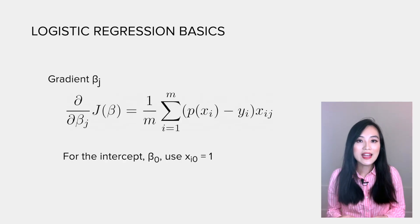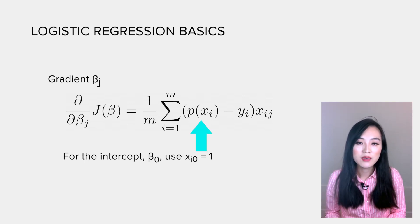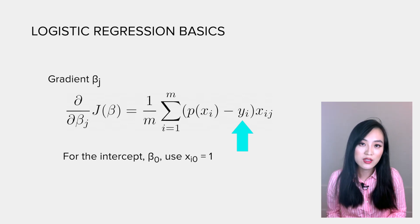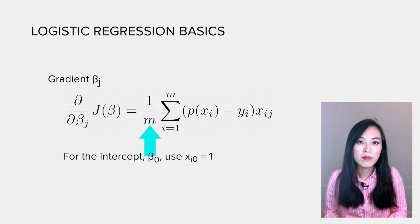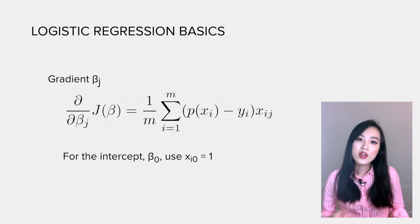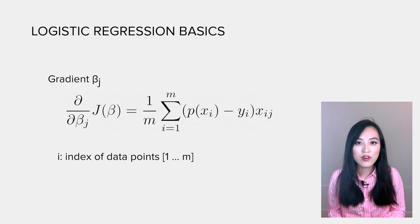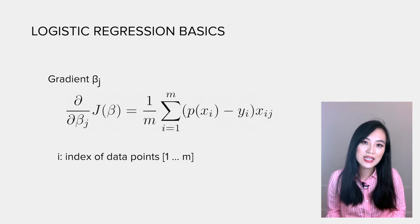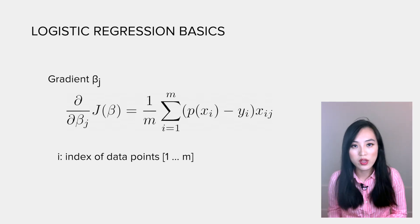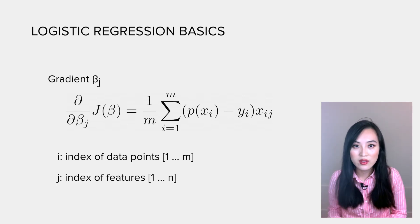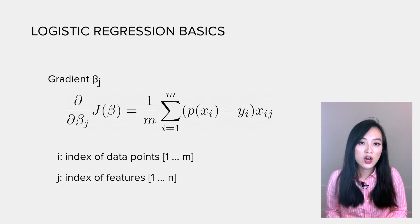For the gradient at beta j, it equals pi, the probability of observing class 1, minus the observed class yi, times xij. Then we take the average from all data points. You see we have introduced i and j here, but don't be confused. Both of them are just indexes. i is from 1 to m representing the index of number of data points, while j is from 1 to n representing the index of number of features.